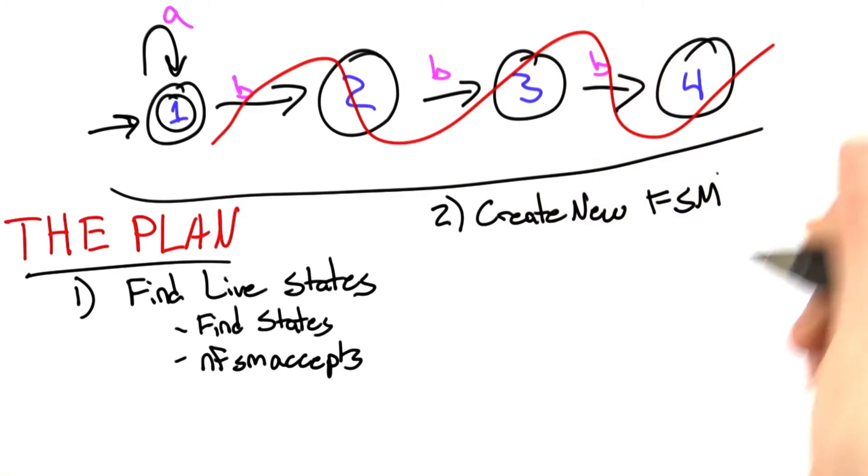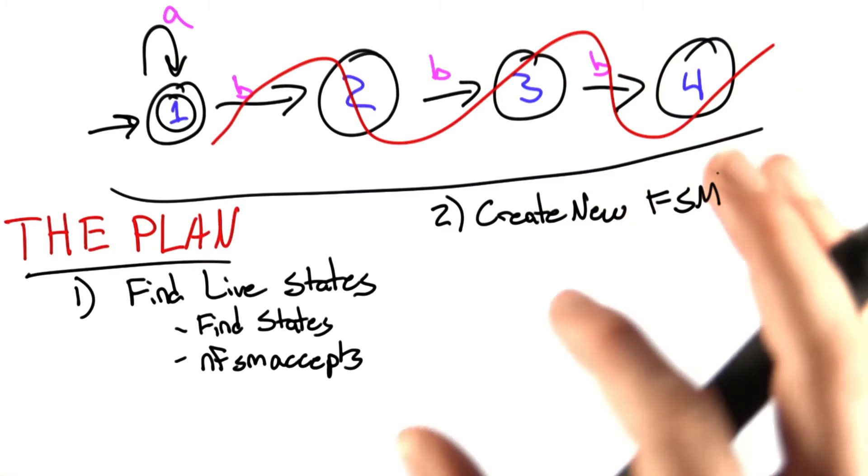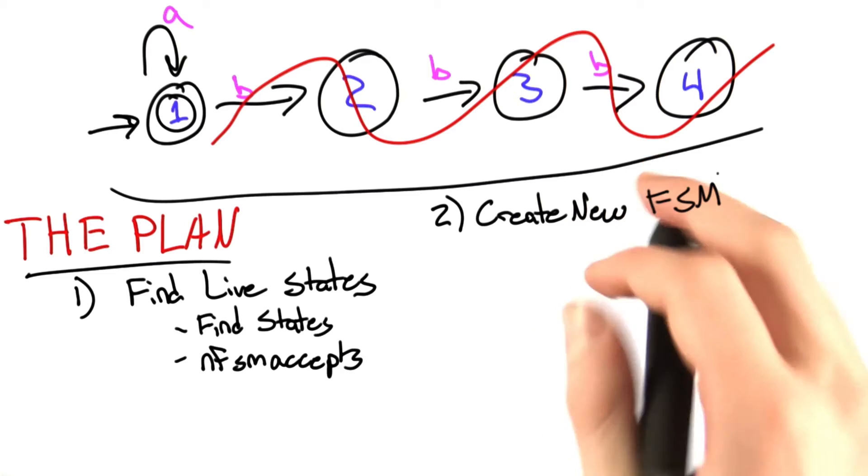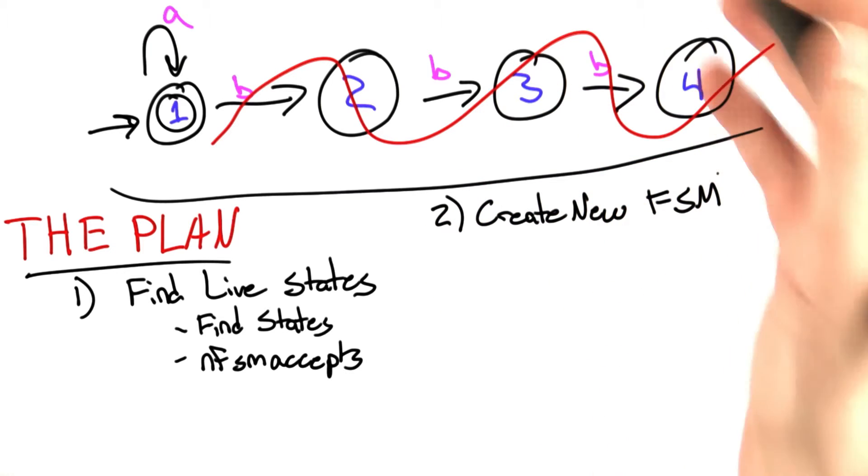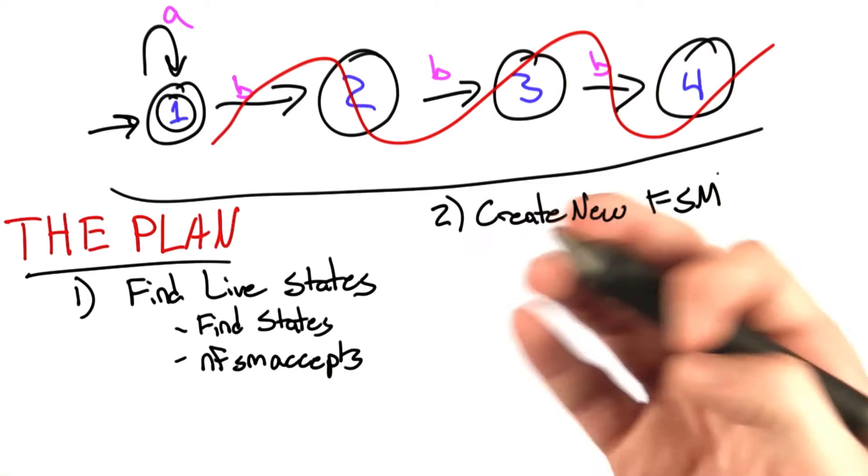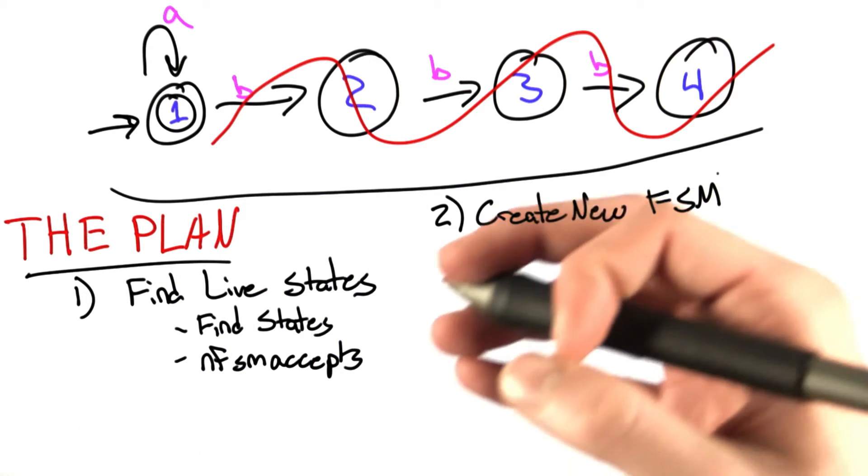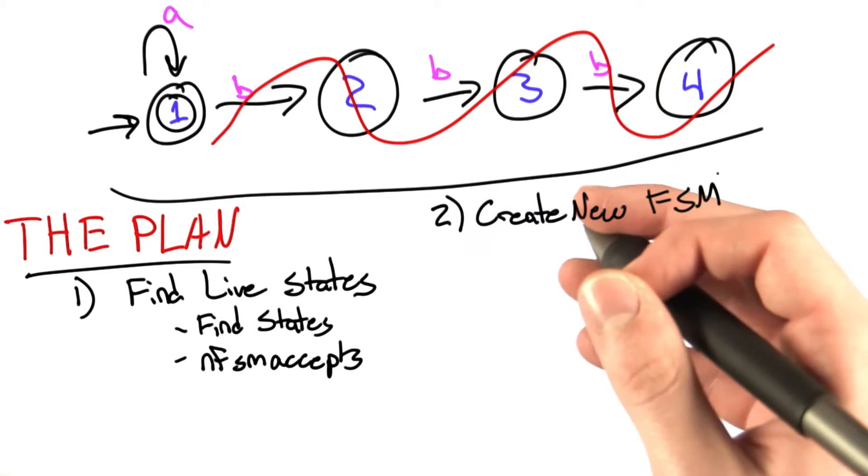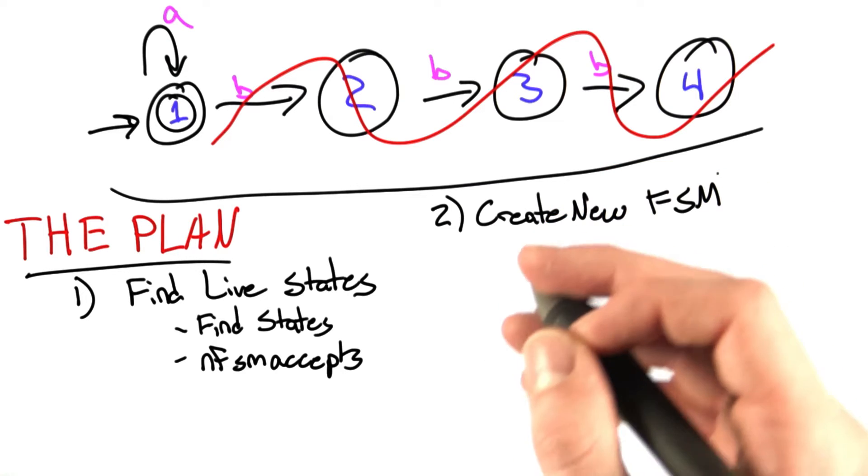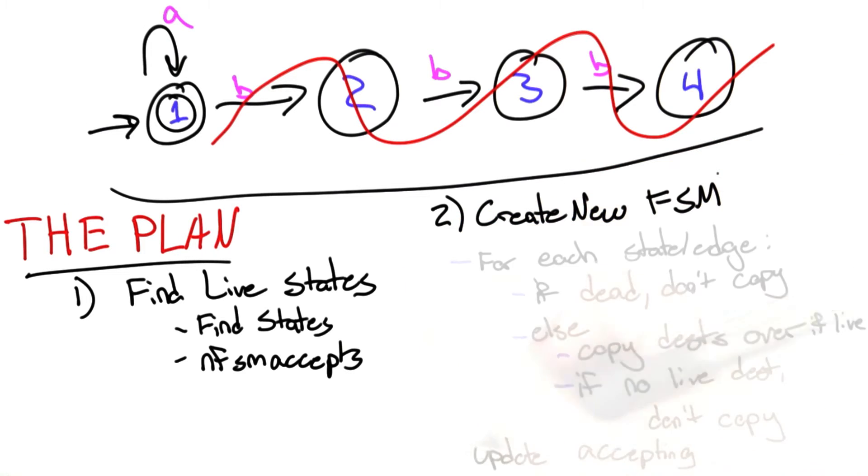Step 2. We're going to create a new finite state machine that doesn't have any of the dead states. And in order to make it a really good, clean definition, we have to take some care. We don't want to include any transitions that lead to dead states. We want to remove all the dead states, and we also want to remove states that no longer point to any live states.